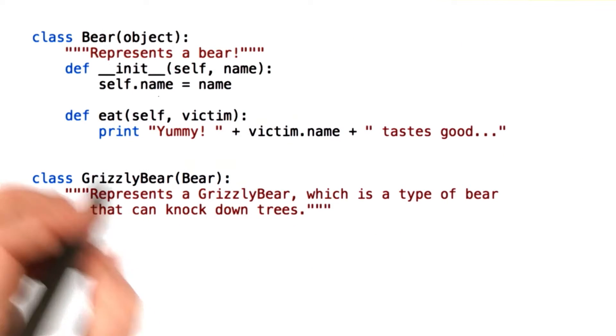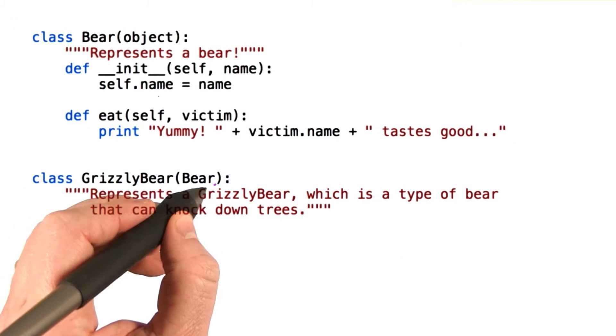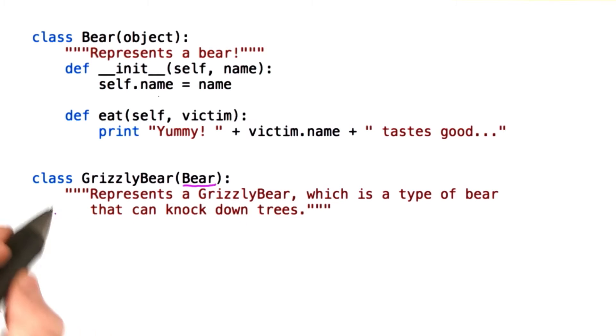Here's what that looks like in code. We've defined a bear class. We've defined a grizzly bear class with bear as its base class. We don't actually have any code in grizzly bear.